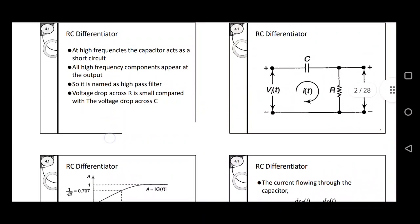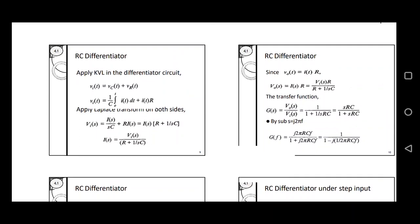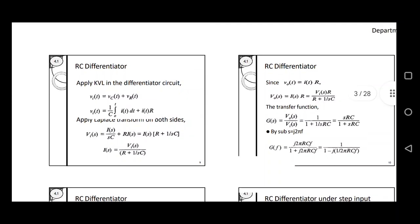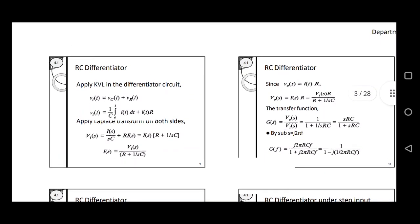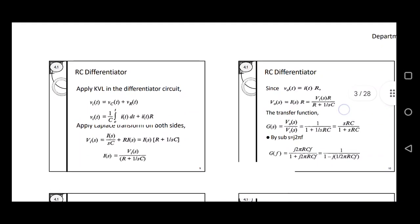The output V0(t) can be given as i(t) into R. Applying Laplace transform again, V0(s) equal to I(s) into R. Substituting the value of I(s), we get V0(s) equal to Vi(s)·R divided by (R plus 1/sC). The transfer function G(s) equals V0(s) by Vi(s), which is output by input. After cancellation, we get G(s) equal to 1 divided by (1 plus 1/sRC), which simplifies to sRC divided by (1 plus sRC).